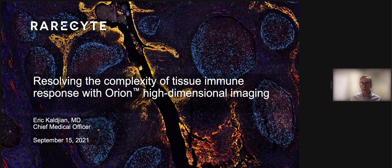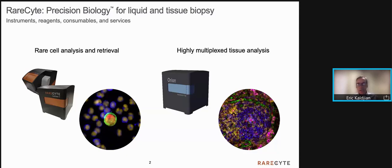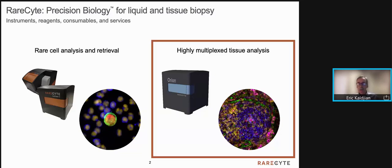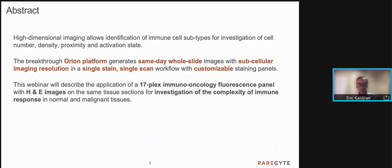Thank you very much, Elizabeth. Hello and welcome to the seminar. I'm very pleased to have this opportunity to discuss highly multiplexed tissue imaging using the remarkable Orion platform. At RareSight, we've developed technology platforms for biomarker analysis and sequencing of rare circulating tumor cells in blood, and also for highly multiplexed tissue imaging, which is the topic for today's webinar. I will present image data derived from the Orion platform, which generates same-day whole slide images with subcellular imaging resolution in a single-stain, single-scan workflow with customizable staining panels. The panel used in this study has 17 markers pertinent to both immunology and immuno-oncology.